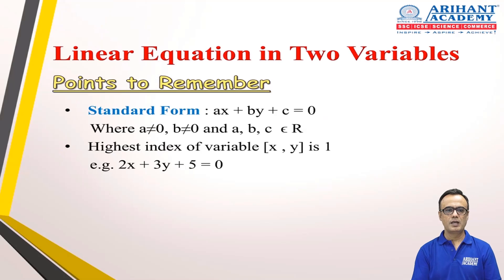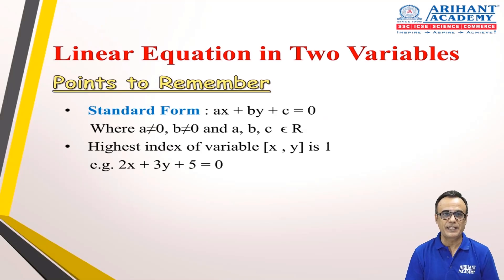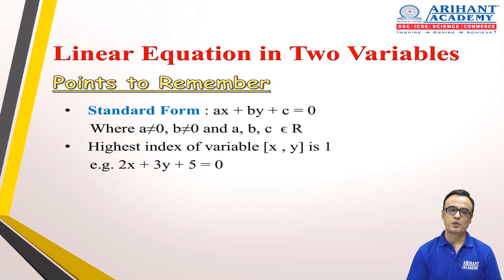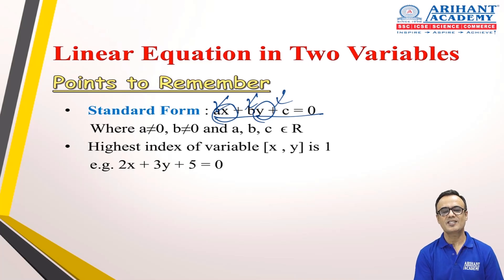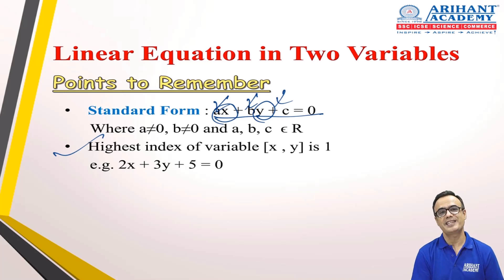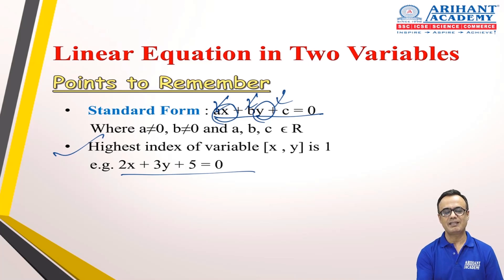As you all can see, linear equation in two variables — the word 'linear' is an adjective form of the word 'line.' An equation must have an equal-to symbol within it, and two variables x and y. So the general form is ax + by = 0, where x and y are the two variables. Here, a and b are the coefficients and c is the constant. The highest power of the variables x and y must be one. Here is a perfect example: 2x + 3y + 5 = 0.